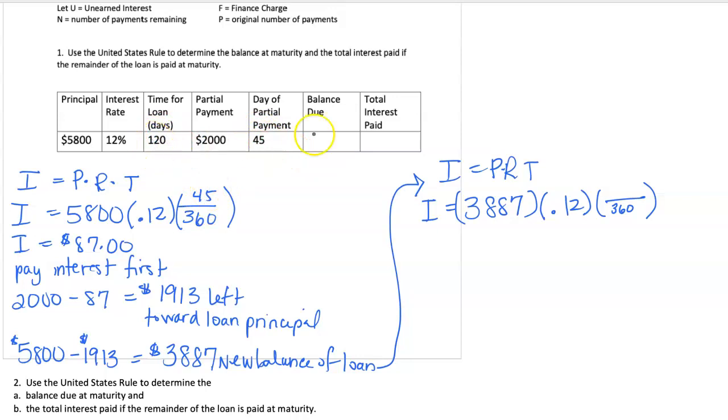So to figure out how much time is left, well we made the partial payment on day 45 and there were 120 days in the loan. So I'm going to take 120 days total for the loan minus the 45 that we already used in this first section and I get that there's 75 days left in the loan. So this part of interest is going to occur in the next 75 days.